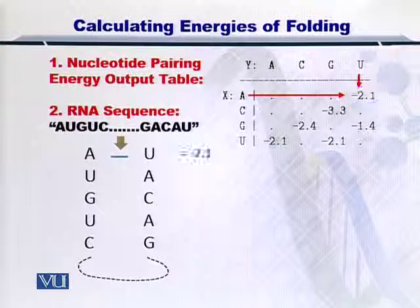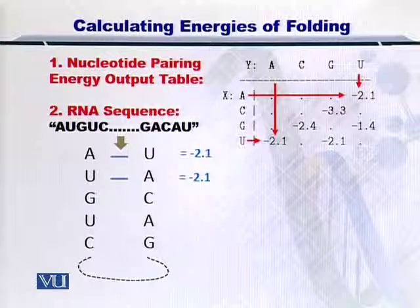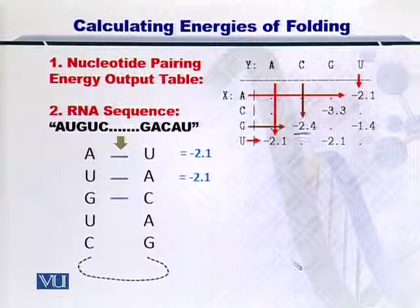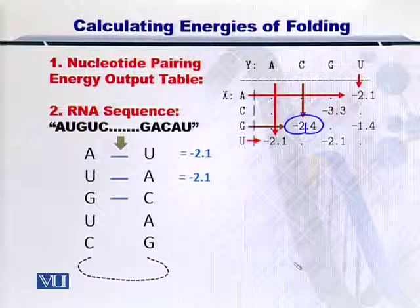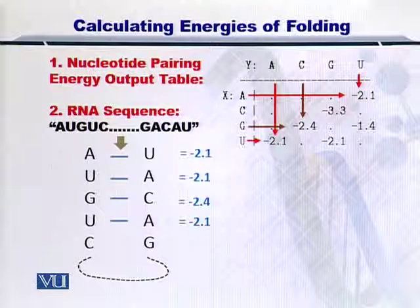Continuing on, if U and A were to bond, the energy given out will be minus 2.1 kilocalories as well. If G and C bond, you can look up from the table and minus 2.1 kilocalories will be given out. You can keep writing each one of them against the bonds that are formed like that.